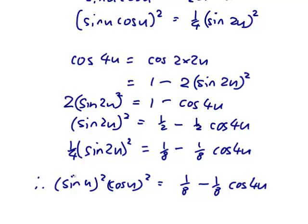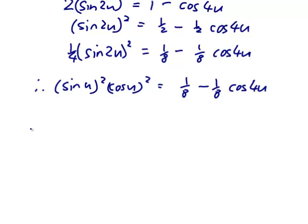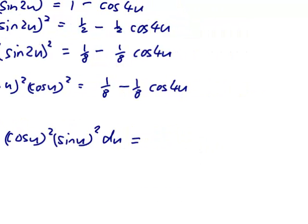And I think that deserves a therefore. Alright, so now we can do our integral. So the integral of cos 2u squared sin 2u squared du is actually the integral of an eighth minus an eighth of cos 4u du.